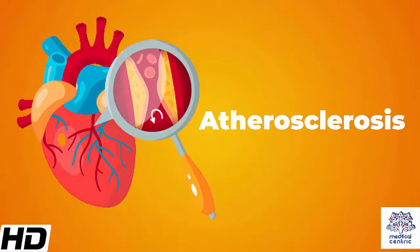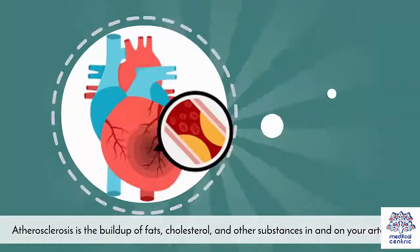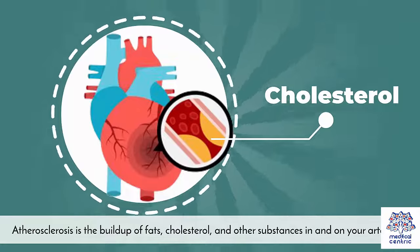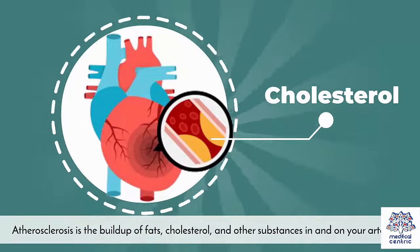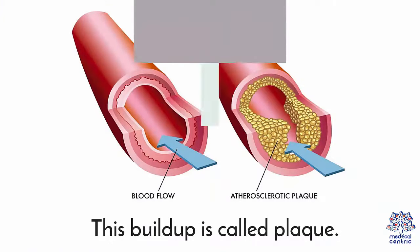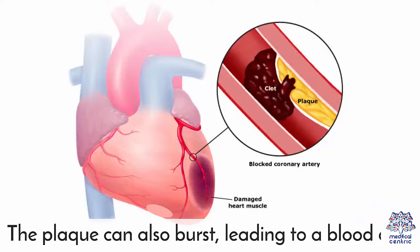Today's topic is atherosclerosis. Atherosclerosis is a specific type of arteriosclerosis. It is the buildup of fats, cholesterol, and other substances in and on your artery walls. This buildup is called plaque. The plaque can cause your arteries to narrow, blocking blood flow. The plaque can also burst, leading to a blood clot.